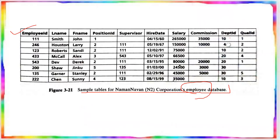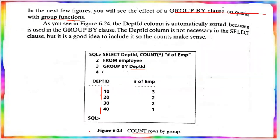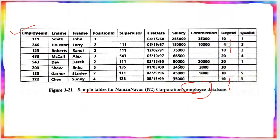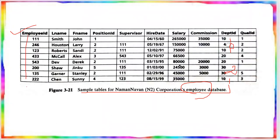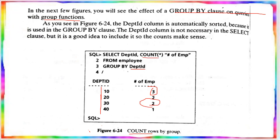For department ID 10, counting gives 1, 2, 3, 4 — the number of employees is 4. Department ID 40 gives 1. Department ID 30 gives 2. So the COUNT function groups the data, and that will be the result from the GROUP BY clause. Each set of rows for a department ID forms one group.